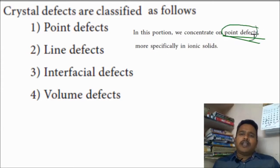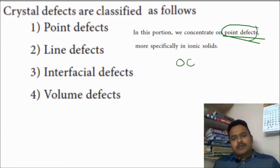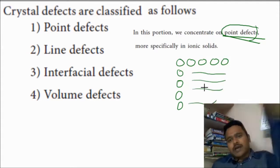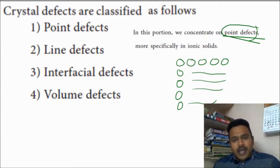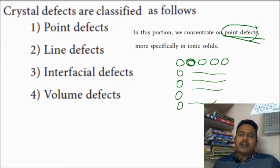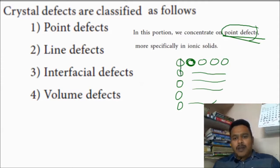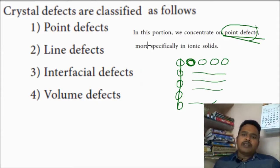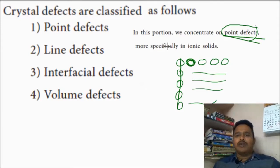Point defect — the name itself is telling. Point defect means whenever the atoms are arranged in a particular row or column, horizontally or vertically, if there is irregularity in the location of one atom — like a point — that is a point defect. If there is irregular arrangement in that particular atom, ion, or molecule, that is a point defect. Line defect means completely there is irregularity in the row or column. Interfacial means there is irregularity in the face of the crystal. Volume defect means some defects arise due to the volume. In this video, we are going to study about the point defect.